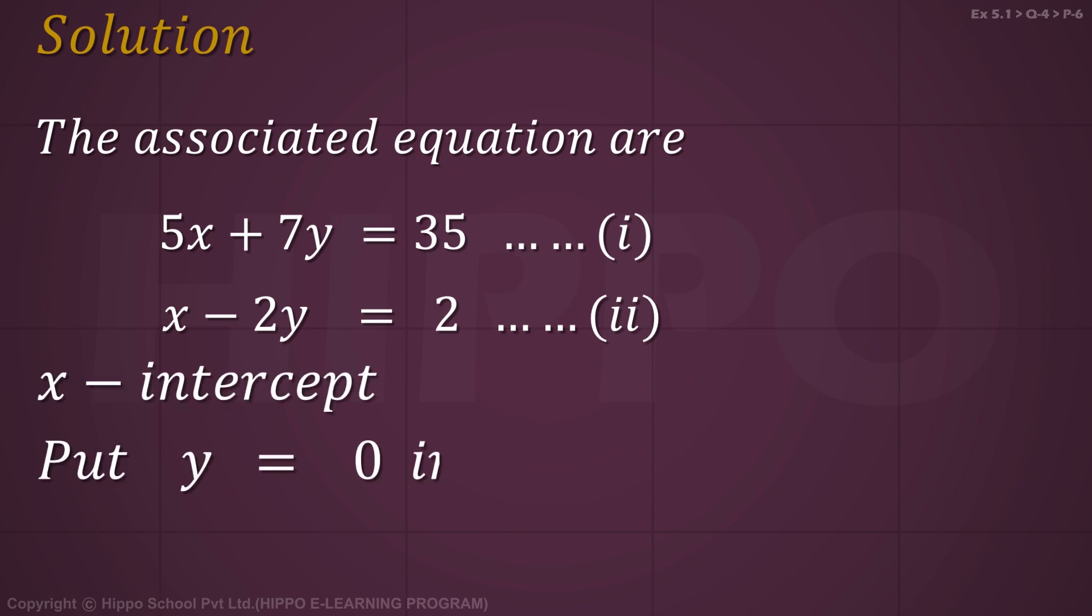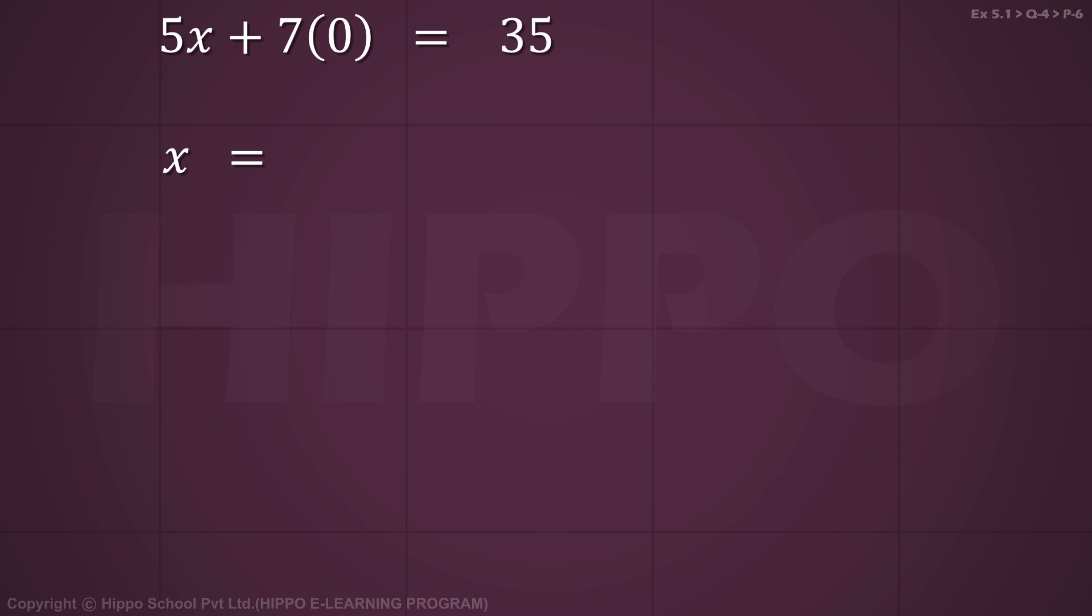For the x-intercept, put y equals 0 in equation 1. In equation 1, putting 0 in place of y gives 5x plus 0 equals 35. Now x equals 35 by 5, which equals 7. So the point is (7,0).